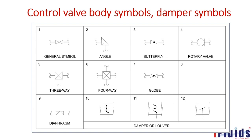Control valve and damper symbols: different types include the general symbol, angle valve, butterfly valve, rotary valve, three-way valve, four-way valve, globe valve, and diaphragm. Dampers and louvers are used in blowers, some boilers, air blowers, and air conditioning systems. These symbols must be used accordingly in the P&ID.